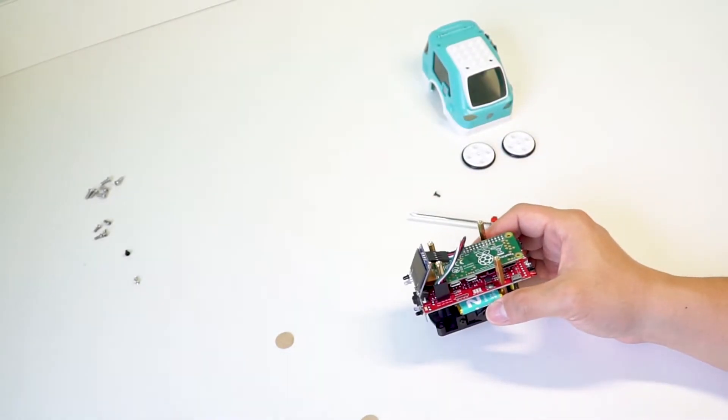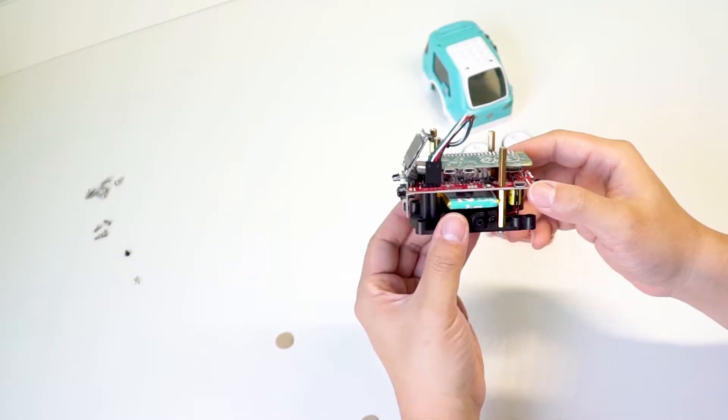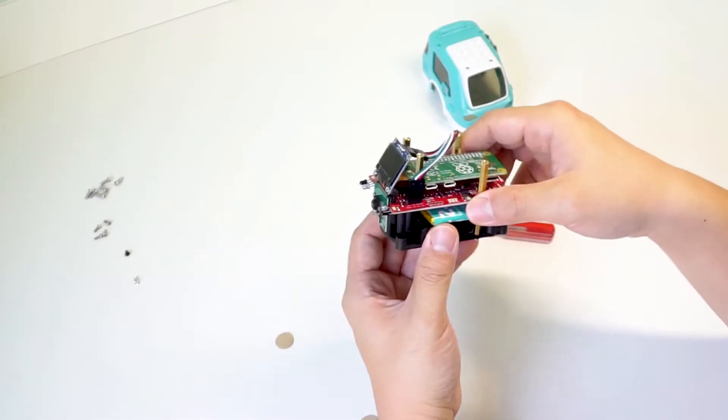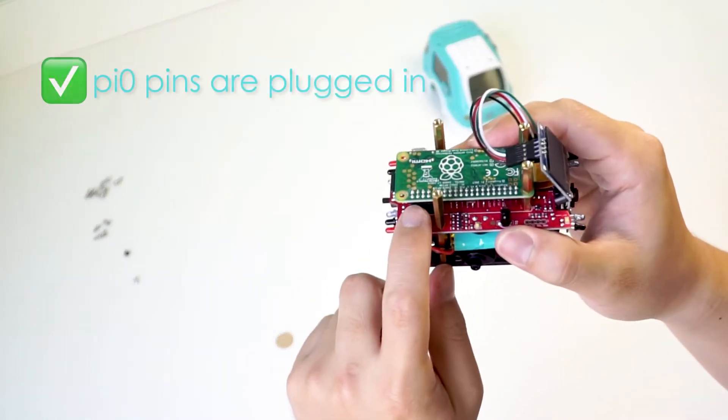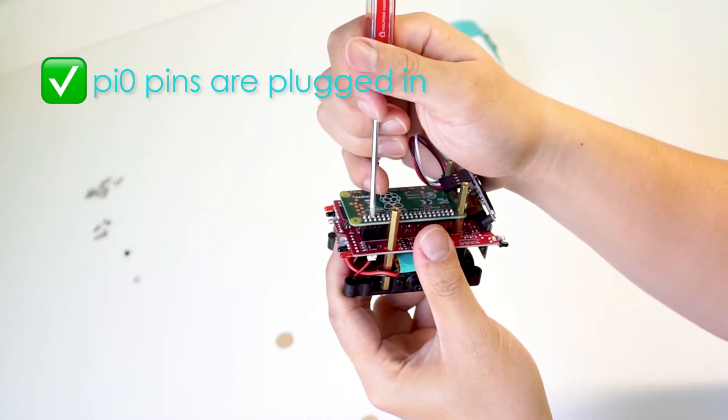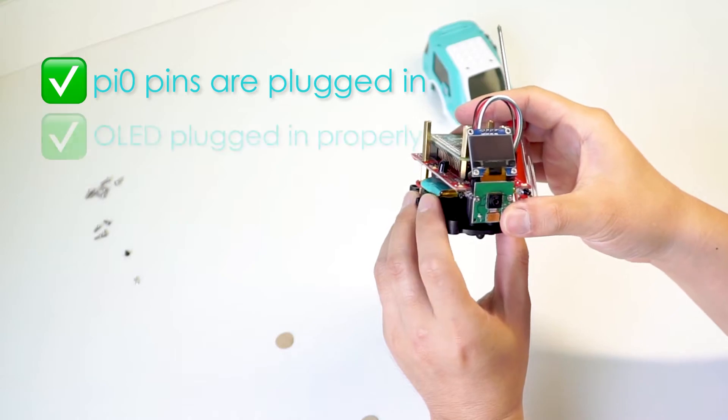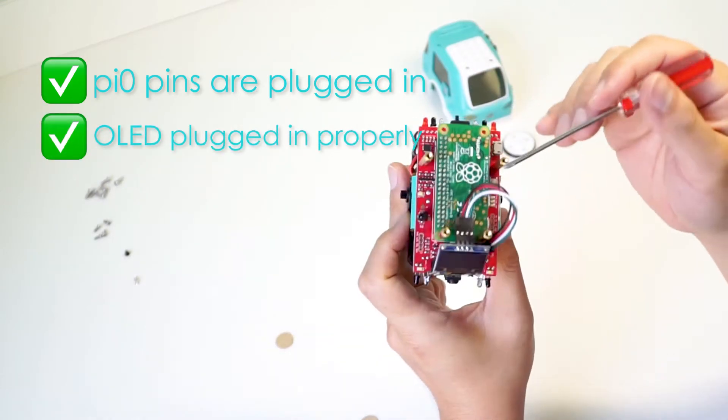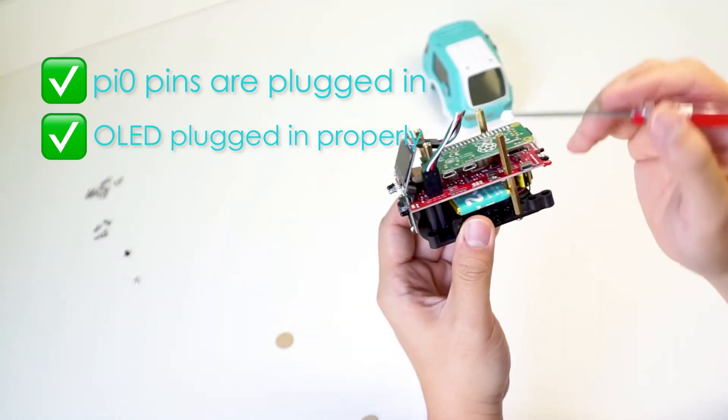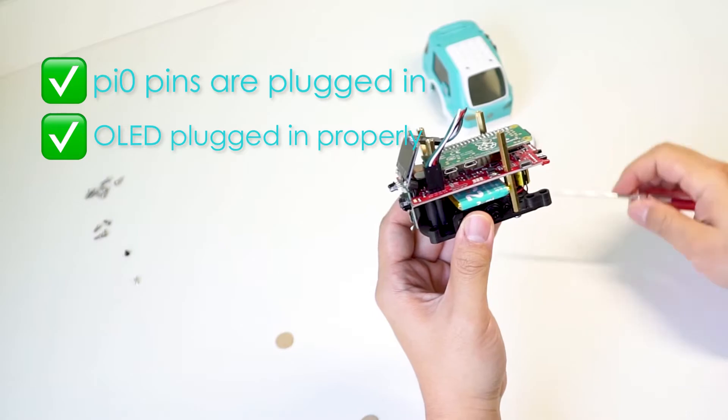All right, we're almost done! Before we put the shell on, let's do two important checks to make sure that your Zumi does not get damaged when you turn on the power. First, make sure that the last five rows of pins on the Pi Zero are plugged into the Zumi board. None of these pins should be hanging out or visible. Second, make sure your OLED jumper cables are plugged in properly. That's black wire on the left, green wire on the right here, and over here, green wire on the left, black wire on the right.